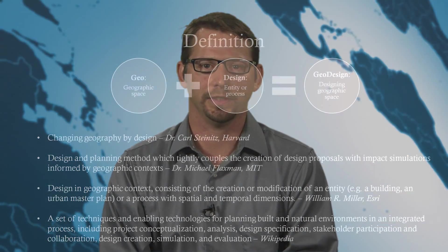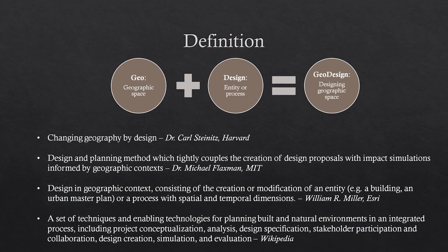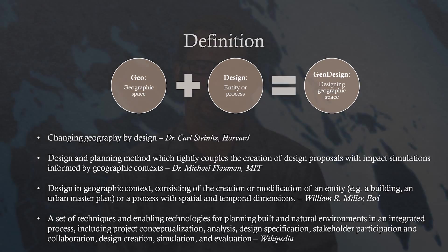Let's start by breaking up the word. Geo can simply be defined as geographic space. Design can be defined as a noun or a verb. As a noun, design generally refers to some object or other entity. As a verb, it usually refers to a process or series of activities. So, geo plus design essentially means designing geographic space. But geodesign has many definitions, as you can see here, and the concept itself is evolving as technology progresses.